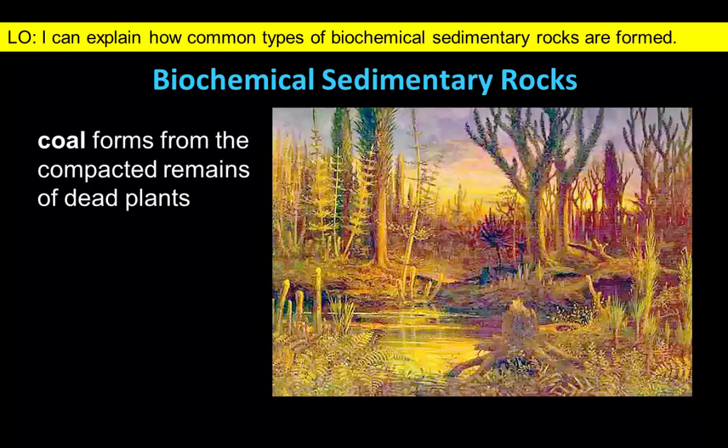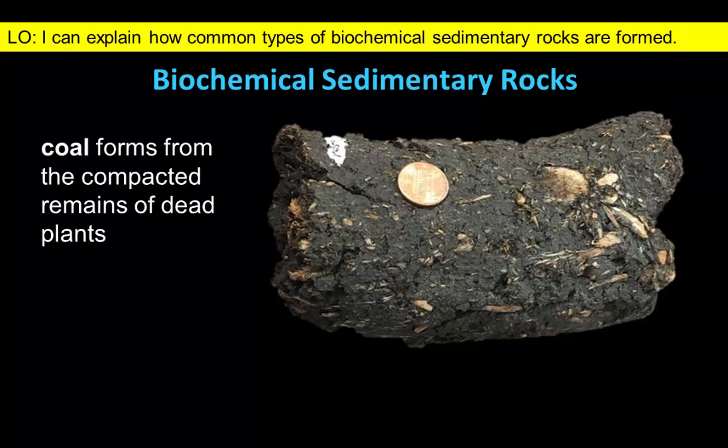Plants on land can also end up as rock. Today's coal was formed from trees and other vegetation growing in ancient forests. To form coal, you need lots of vegetation that can be buried rapidly in warm, wet environments like tropical swamps.